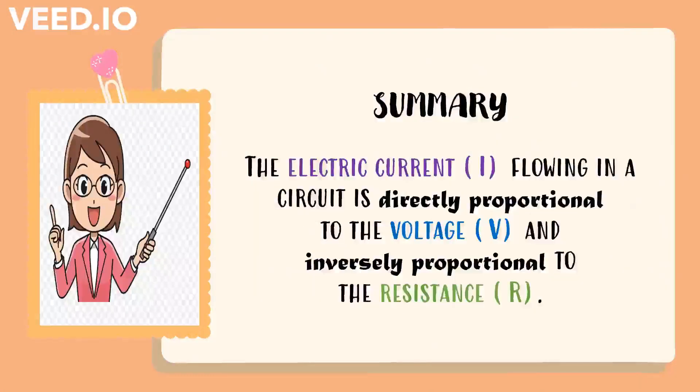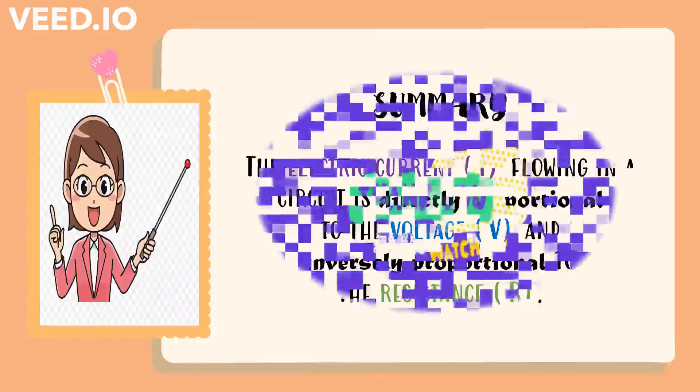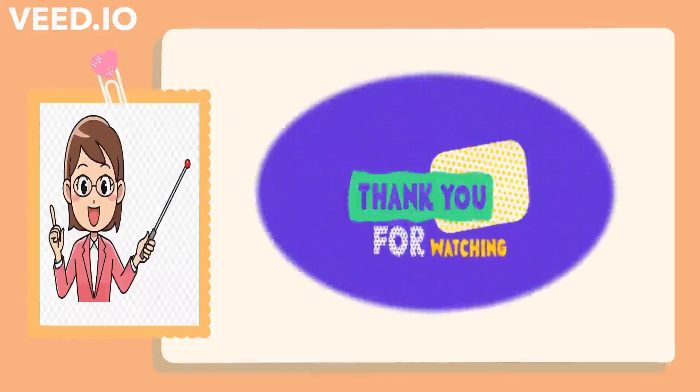In summary, the electric current flowing in the circuit is directly proportional to the voltage and inversely proportional to the resistance. Stay tuned to our next video. Thank you for watching.